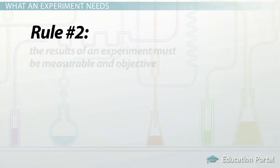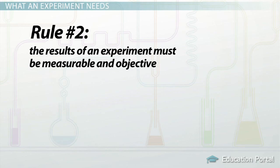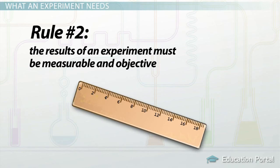The second rule is that the results of an experiment must be measurable and objective. Scientists use standard units to measure different properties like length, time, volume, mass, and speed.